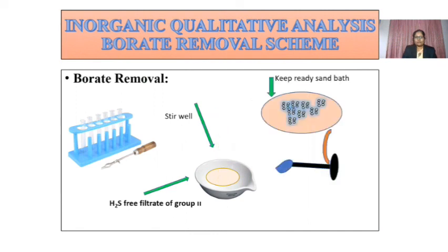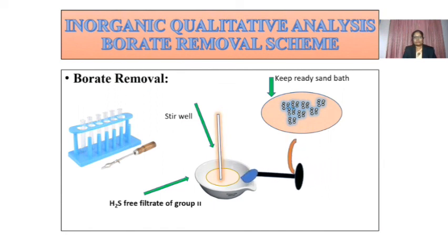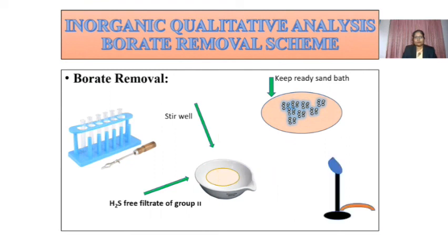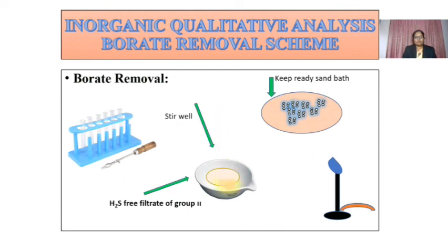After stirring, allow the burner to ignite this mixture. A green-edged flame will appear in the evaporating dish due to the presence of borate, which we are going to remove. Stir it continuously until the green-edged flame disappears.